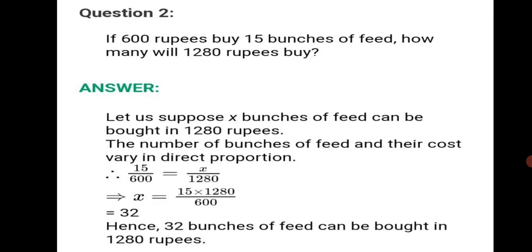Question 2: If 600 rupees buy 15 bunches of feed, how many will 1280 rupees buy? We don't know how many bunches 1280 rupees will buy, so we assume it to be X. Let us suppose X bunches of feed can be bought for 1280 rupees. The number of bunches of feed and their cost vary in direct proportion. Because in 600 rupees we get 15 bunches, in 1280 rupees we will get more — both are in increasing order. Therefore, 15 upon 600 is equal to X upon 1280.